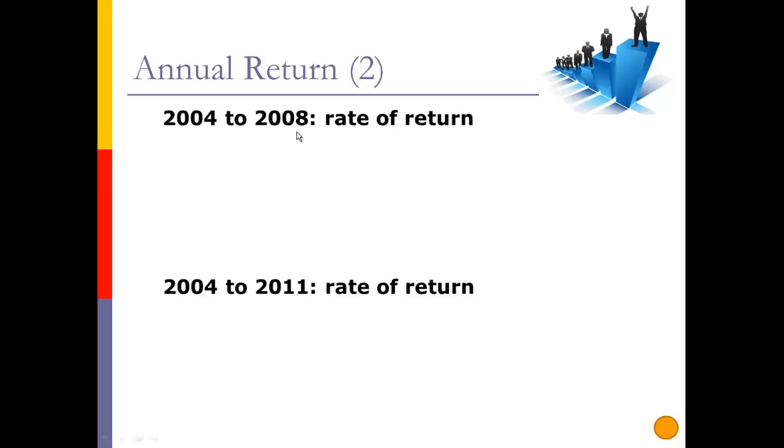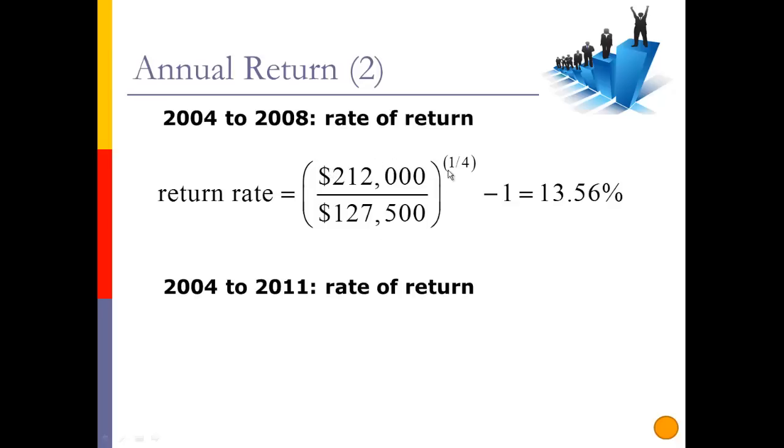So from 2004 to 2008, we had a beginning value of $127,500. Any value I would have sold it at $212,000 would have been for four years, so that's why 1 over 4. When you do this calculation, move the decimal places two places, because this calculation actually gets you 0.1356. By moving it two decimal places, I get my nice percent. So if I would have sold it in 2008 for $212,000, I could have made an annual return rate of 13.56%. And if you talk to any investor right now, a return rate of 13.56% is a great investment. That would have been great.